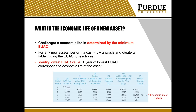Looking at one asset at a time, we might want to know what the economic life of it is. For a Challenger, the economic life is actually determined by the minimum EUAC. For any new asset, we can perform a cash flow analysis and create a table to find the EUAC for each year. As we can see, the lowest EUAC occurs in year three, where it's about $12,000, and this will be the year that corresponds to the economic life of the asset — in this case, three years.